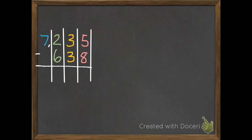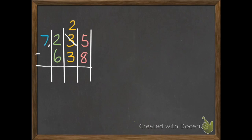We start with our ones: 5 ones subtract 8 — I can't do that if I only have 5. So we borrow from its neighbor, which has 3 tens. We give away 1 ten, so now it has 2. If it gave us a 10 and we already had 5 ones, we now have 15 ones. 15 subtract 8 is 7.